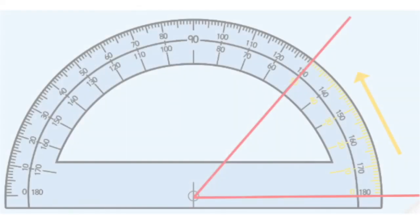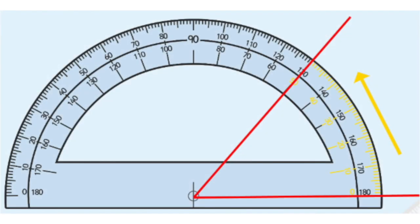Helpful tips. Sometimes you might come across angles which lay in an anti-clockwise direction. This is when you need to use the inner scale of the protractor.